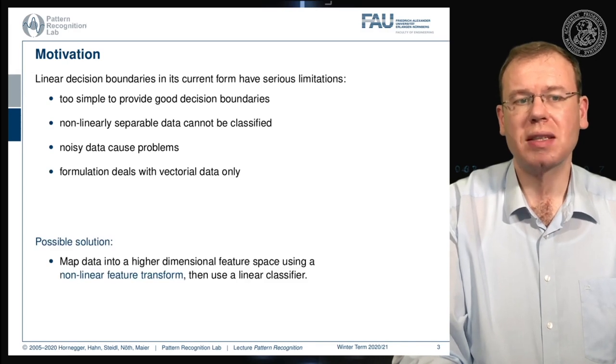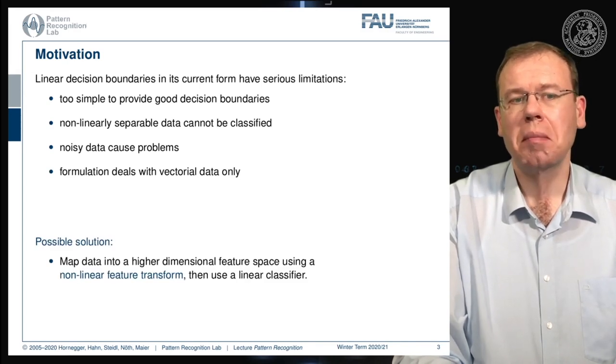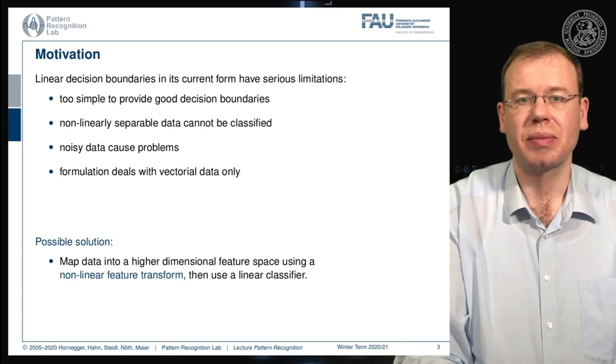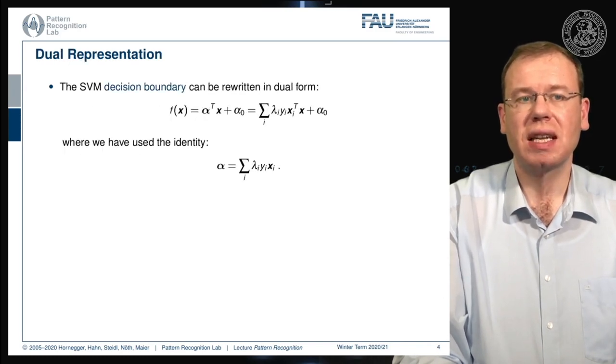One possible solution that we already hinted at is mapping into a higher dimensional space using a non-linear feature transform and then use a linear classifier. We've seen that the SVM decision boundary can be rewritten in dual form and we could see that we essentially got rid of the actual normal vector and everything could be written as sum over the Lagrange multipliers, the class observations and the actual features.